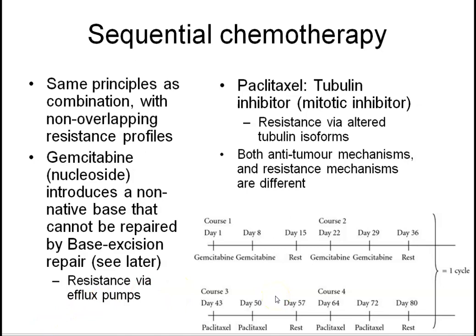After this session, you should be able to explain the mechanism of action of the major cytotoxic chemotherapy agents, with the exception of tubulin inhibitors which will be covered in the next session. You should also be able to explain why certain agents are used alongside each other — because they have synergistic but different mechanisms of action — and why they should not have overlapping resistance profiles, since shared resistance mechanisms mean that once the cancer resists one drug, it simultaneously resists the other.